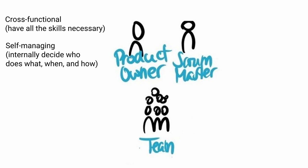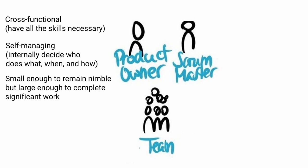Smaller teams communicate better and are more productive. If Scrum teams become too large, they should consider reorganising into multiple cohesive teams each focused on the same product and sharing the same product goal, product backlog and product owner. They are structured and empowered by the organisation to manage their own work, and the entire team is accountable for creating a valuable, useful increment every sprint.